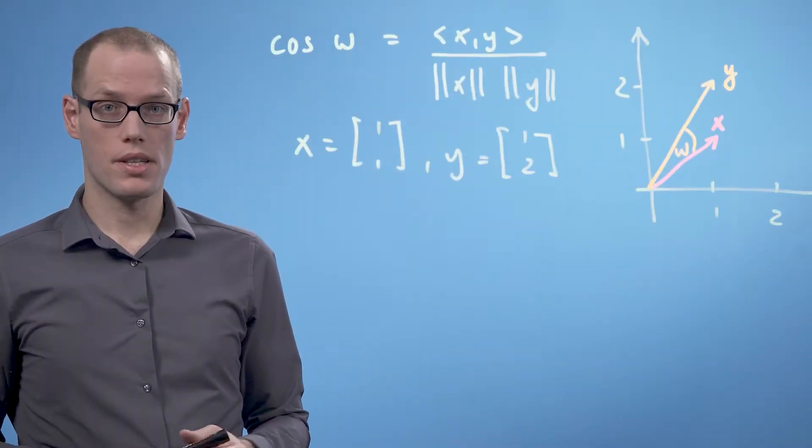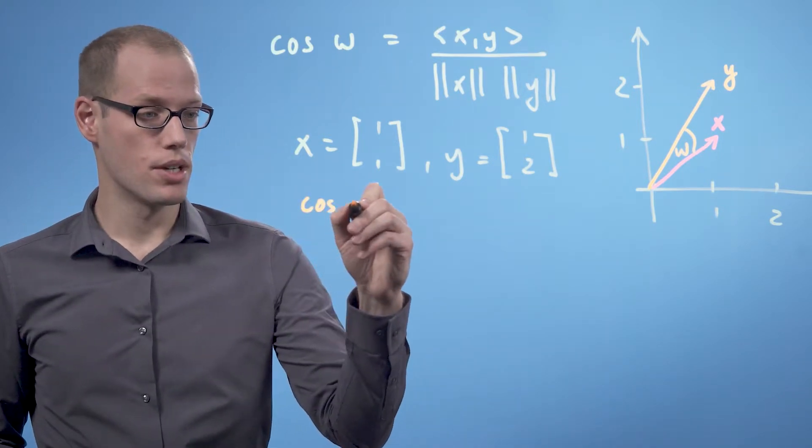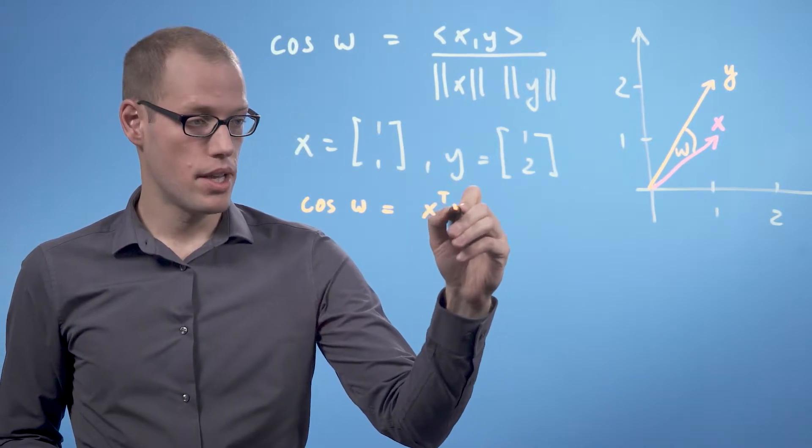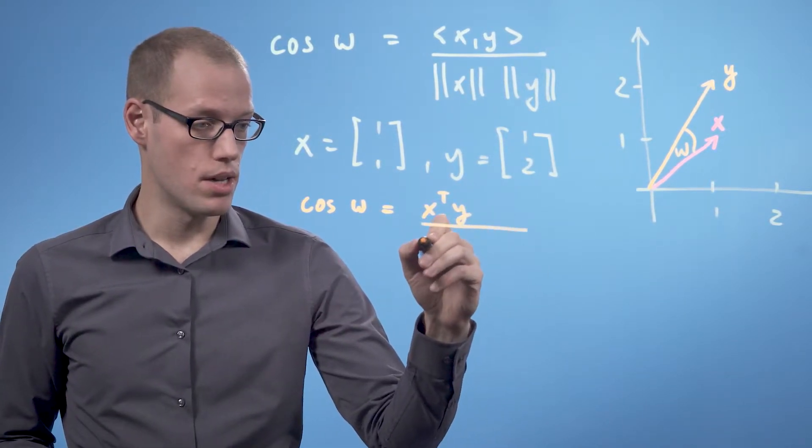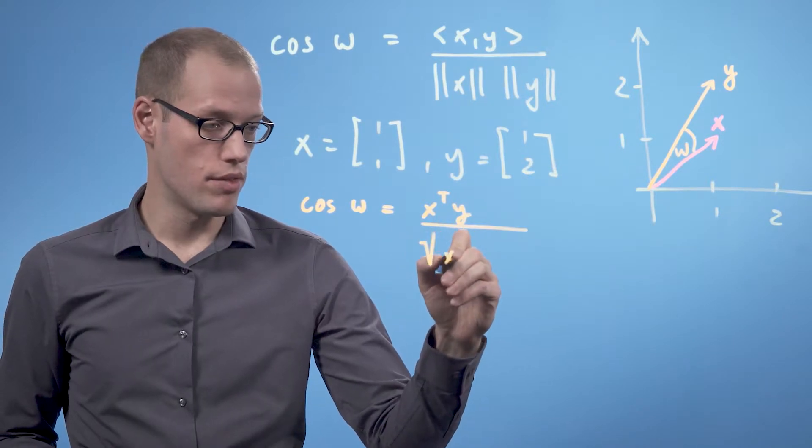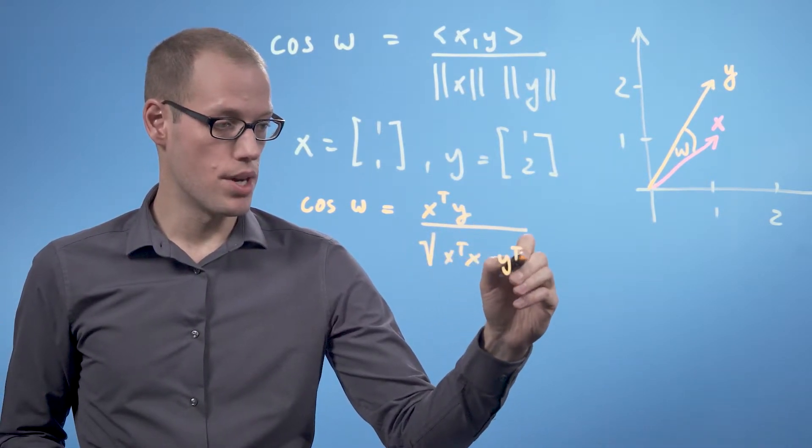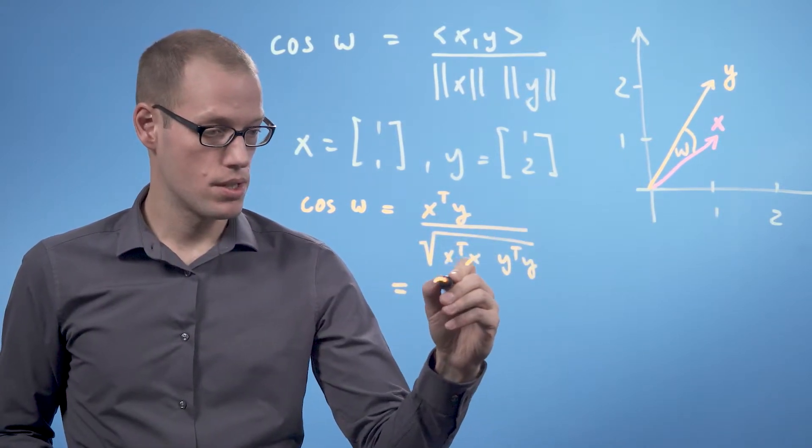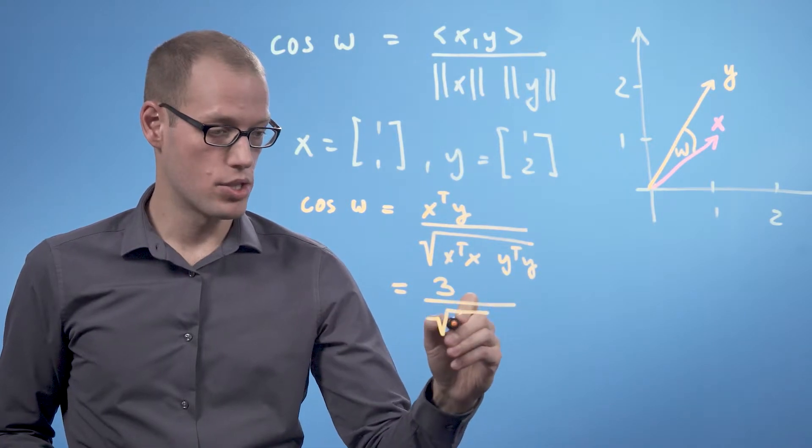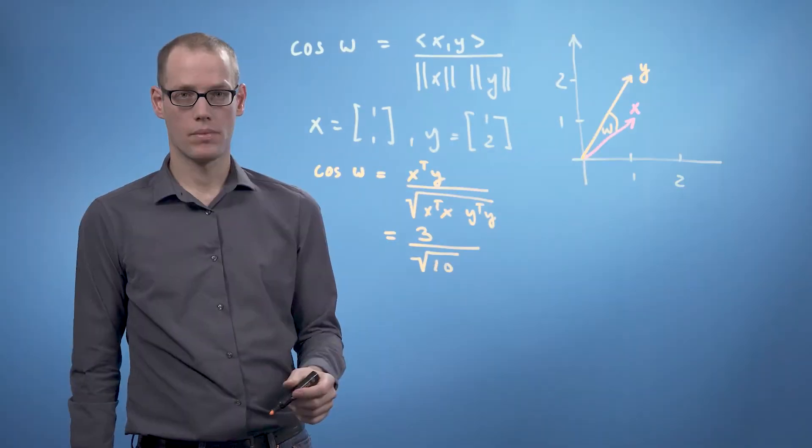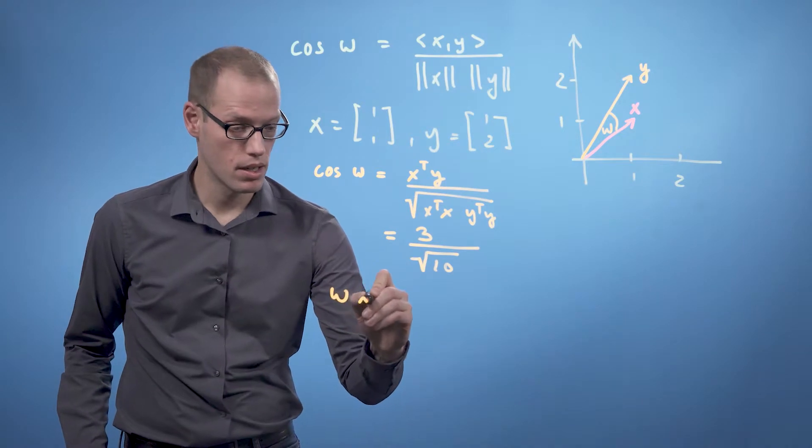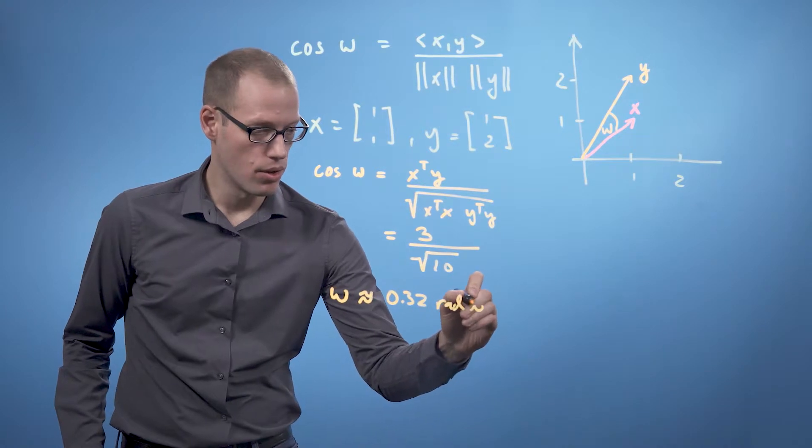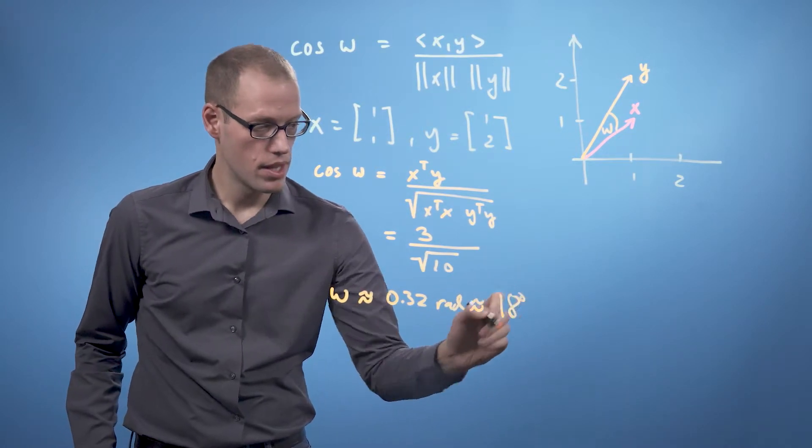And we're interested in the angle omega between those. If we use a dot product as the inner product, we get that the cosine of omega is x transpose y divided by the square root of x transpose x times y transpose y, which is 3 divided by the square root of 10. This means the angle is approximately 0.32 radians or 18 degrees.